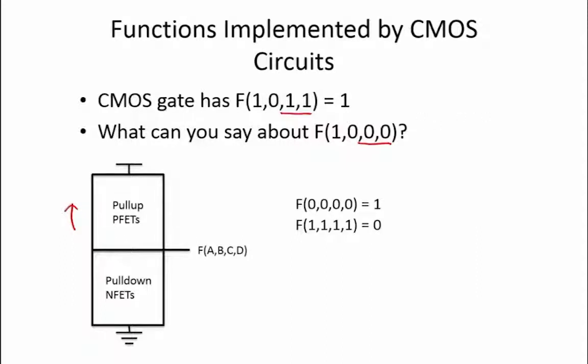Since we were already producing a high output with even fewer PFETs turned on, we are guaranteed that by turning more PFETs on and turning some NFETs off, the only thing we can do is maintain our high output, so f(1,0,0,0) equals 1.